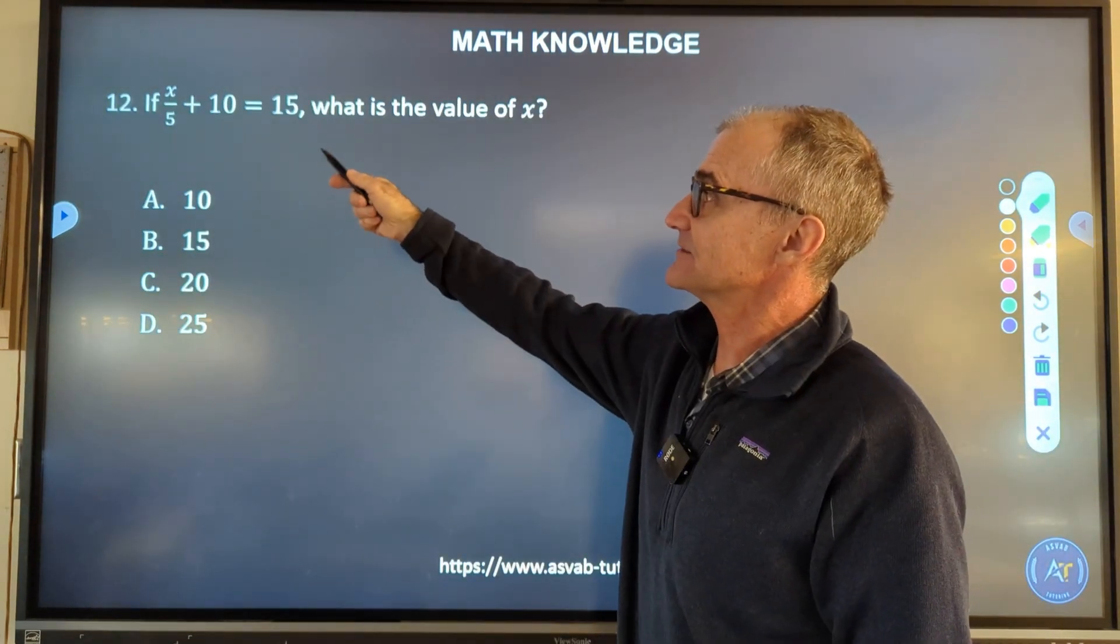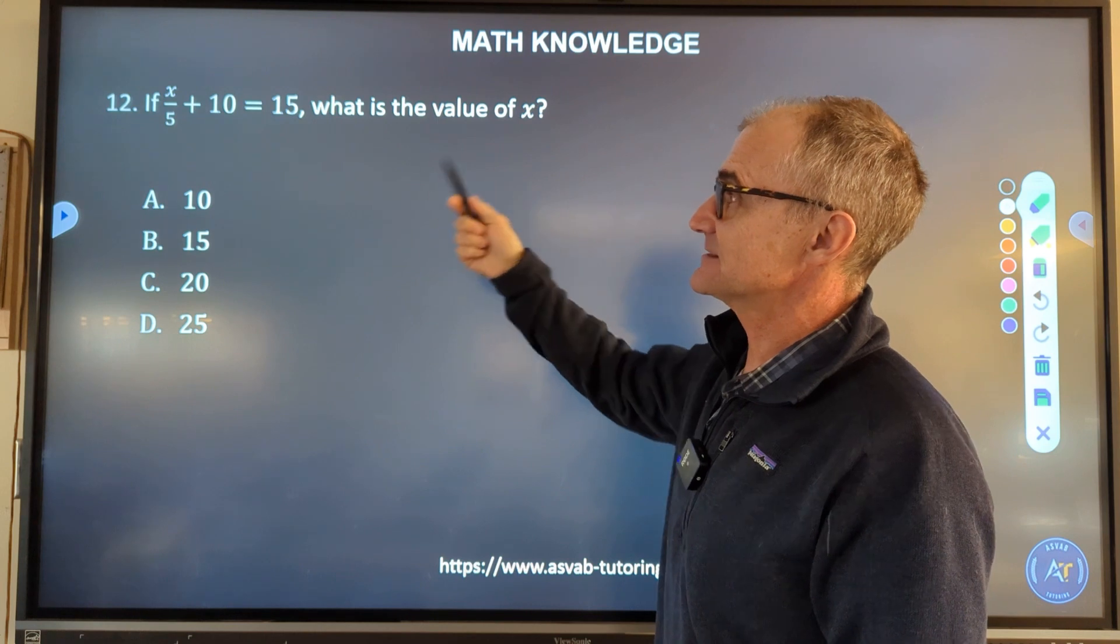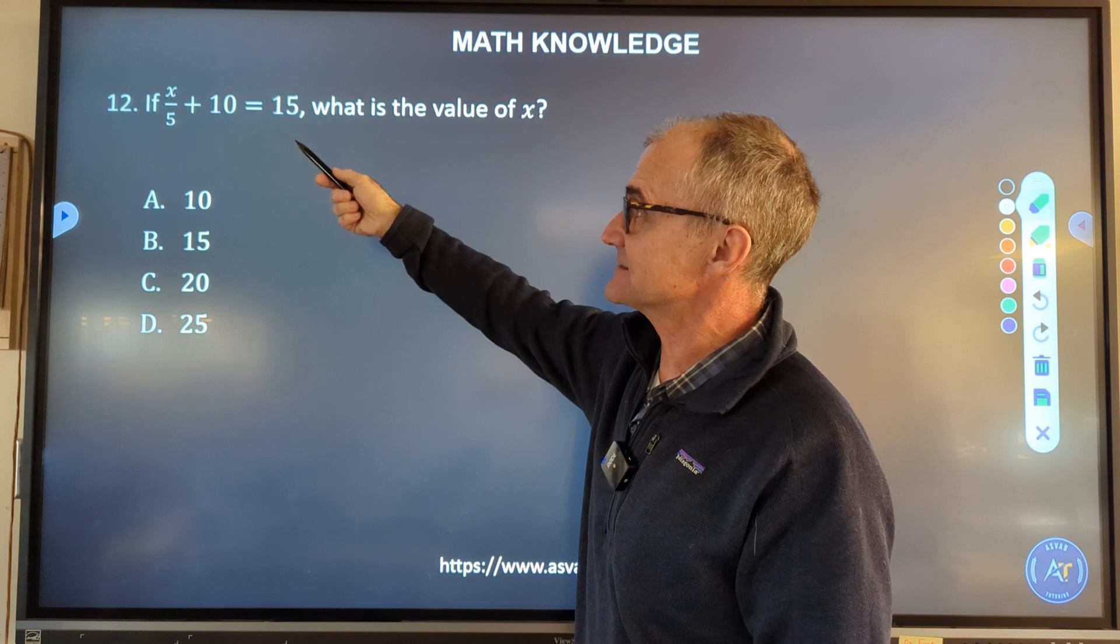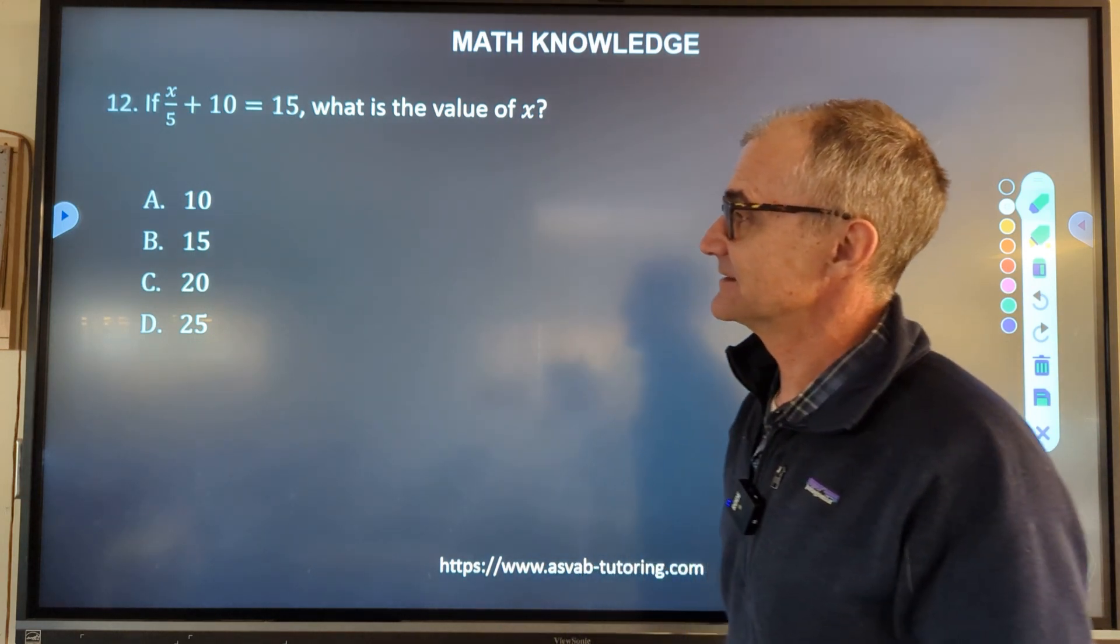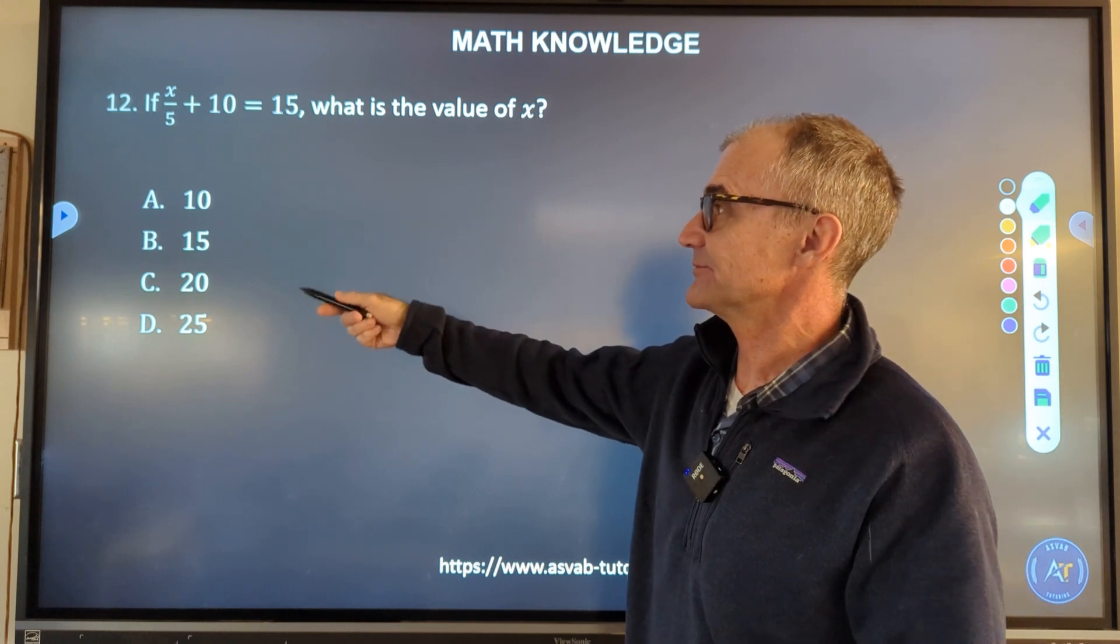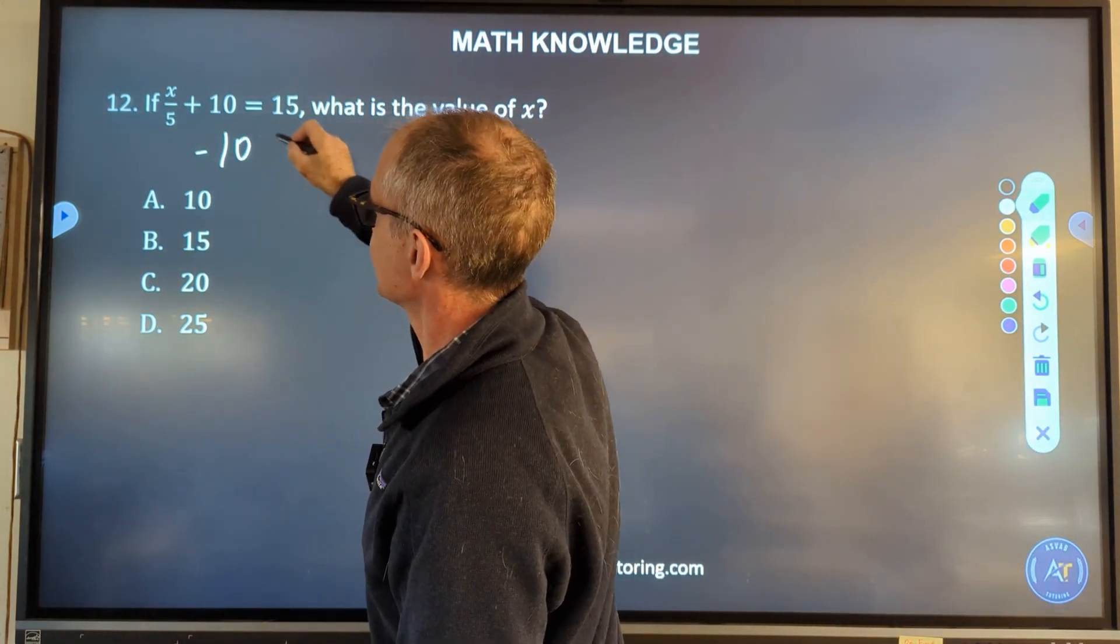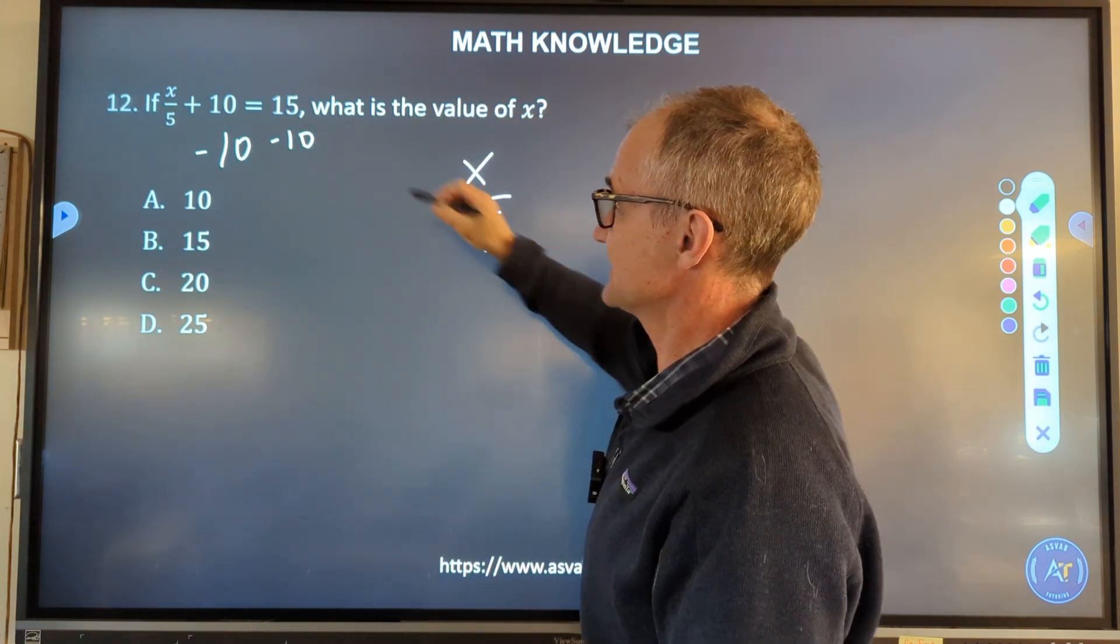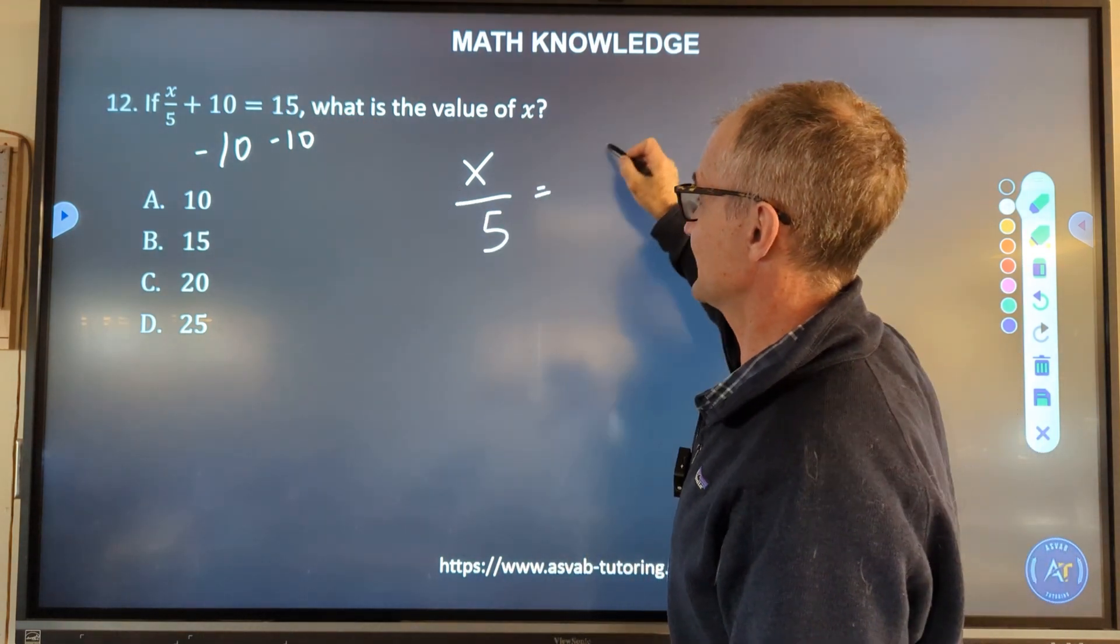Number 12 is x/5 + 10 = 15. What's the value of x? Same thing, however, here we have a fraction. So we're going to have to get x by itself. I glance down at the answers, they're all increments of 5, so we'll see how that goes. So first thing I'll do here is I'll subtract 10 from both sides.